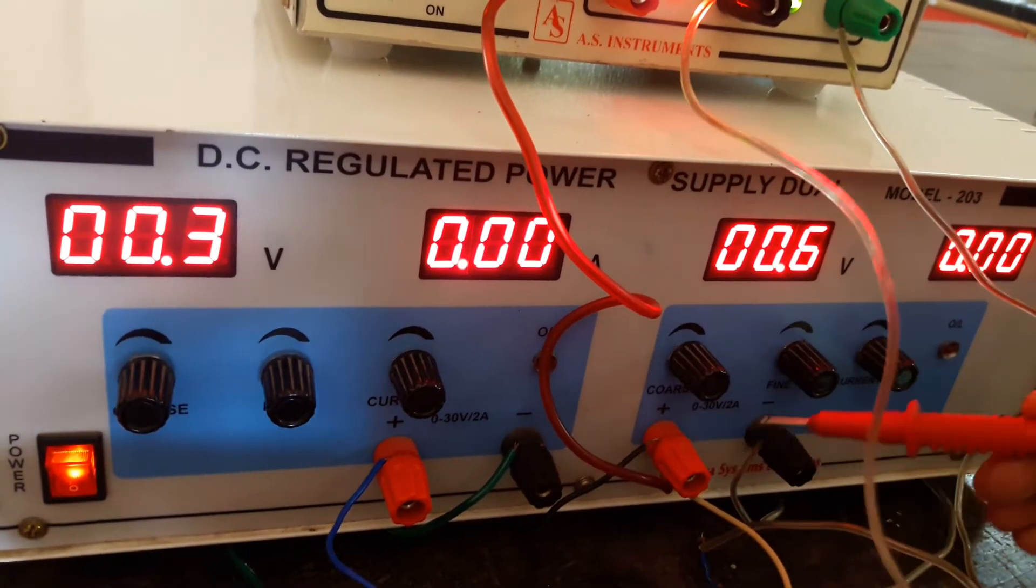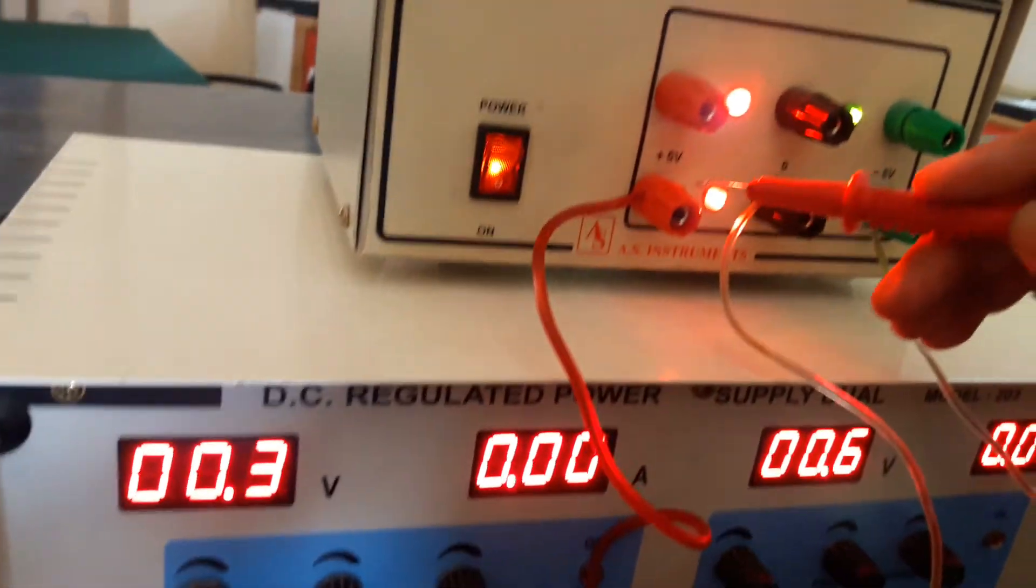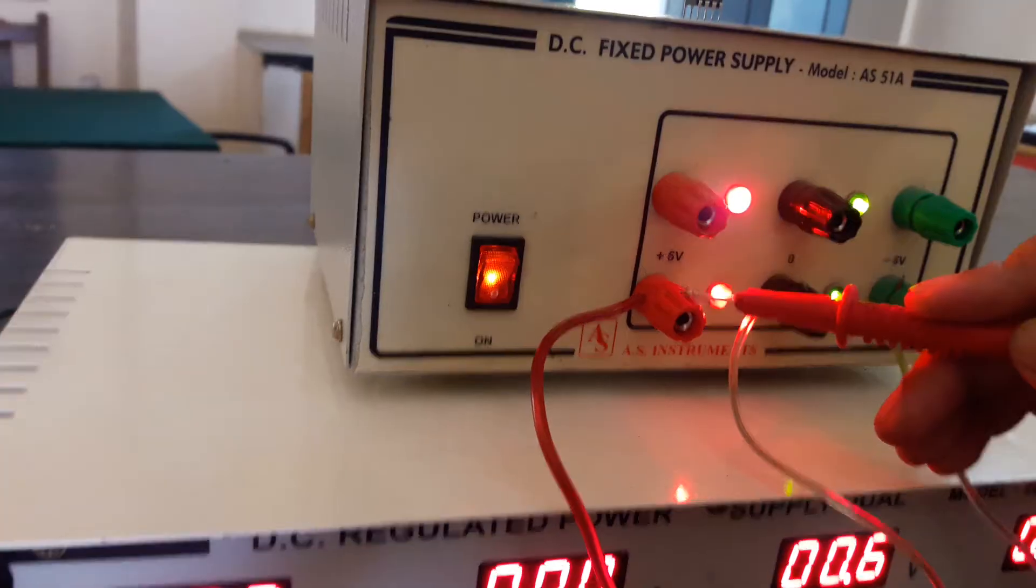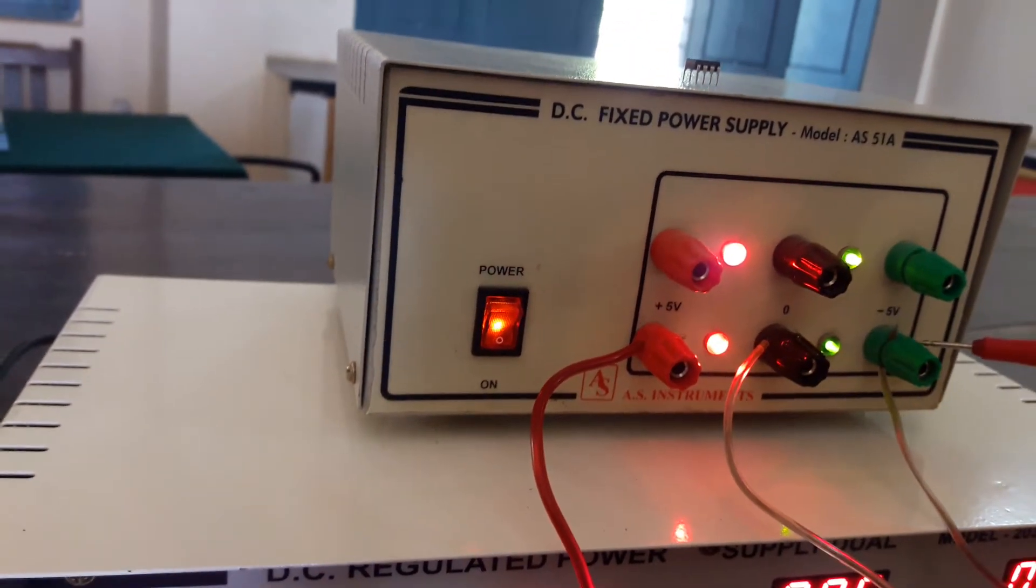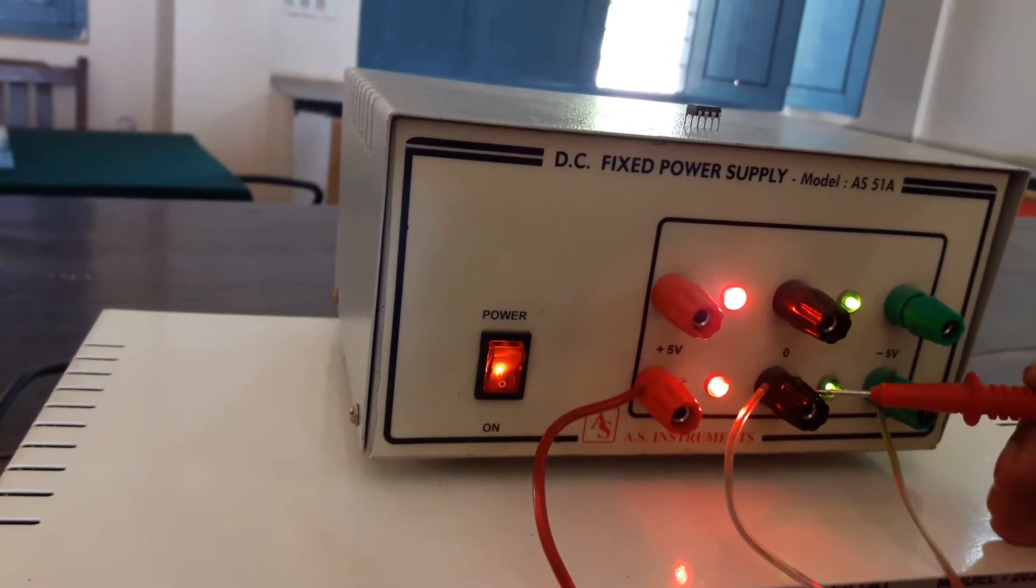The negatives of both V1 and V2 should be grounded, and plus 5 volts should be given to pin number 7, minus 5 volts to pin number 4, and this terminal should be grounded.